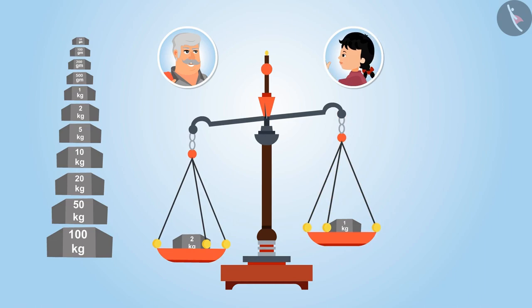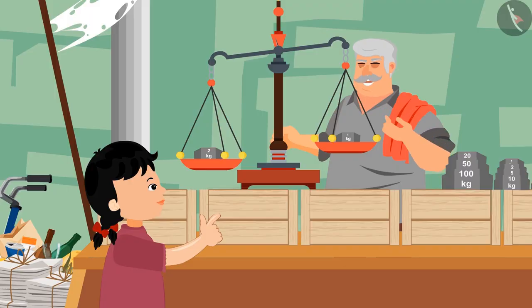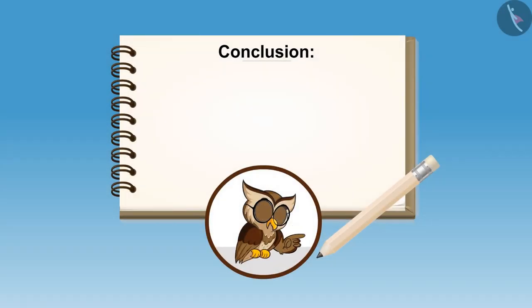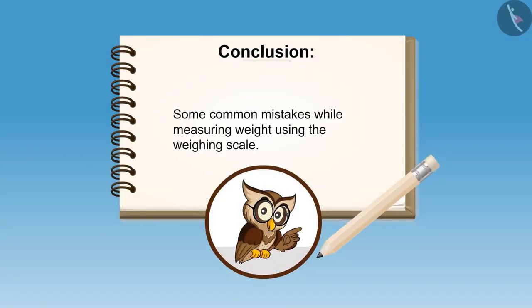Yeah, exactly, exactly. Now you have learnt it properly. So kids, have you understood? In weighing scale, heavier weight moves downwards and lighter weight moves upwards. In this video we have learnt about some common mistakes while measuring weight using the weighing scale.